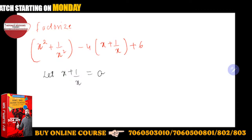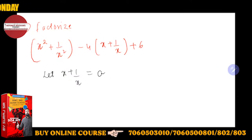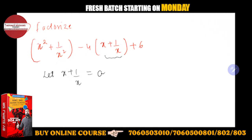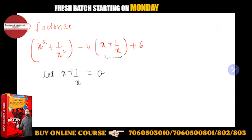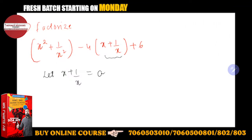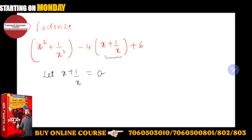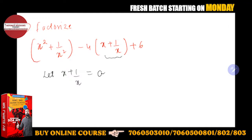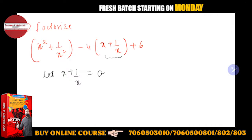Let x plus 1 upon x is equal to a. Then do what — squaring both the sides, kyunki yahan par x plus 1 upon x ki value mein a rakh dunga. But I want the value of x square plus 1 upon x square also in terms of a, taaki meri saari equation simplified form mein a ke terms mein aa jaaye. Aur main usko phir factorize karke, finally a ki value x se replace kar dunga.